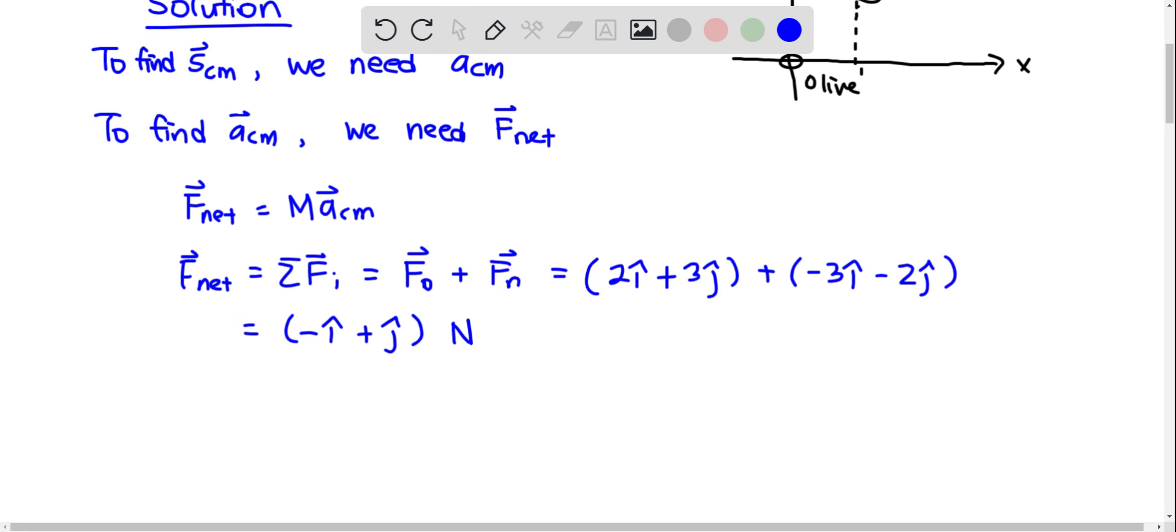And then A_CM is F_net divided by total mass, which is 2 kg. The mass of the olive is 0.5 kg, the mass of the nut is 1.5 kg, and so the total M would be 2 kg.